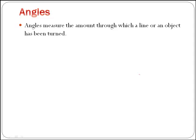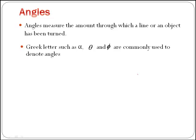Angles measure the amount through which a line or an object has been turned. Greek letters such as alpha, theta, and phi are commonly used to denote angles, but we usually represent angles like this. This is the angle alpha.